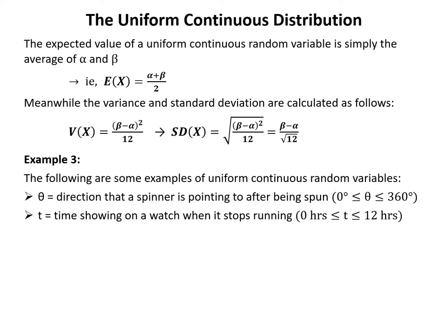The expected value of a uniform continuous random variable is simply the average of alpha and beta — the midpoint between the two values: E[x] = (α + β)/2. The variance equals (β − α)²/12, and the standard deviation equals (β − α)/√12.